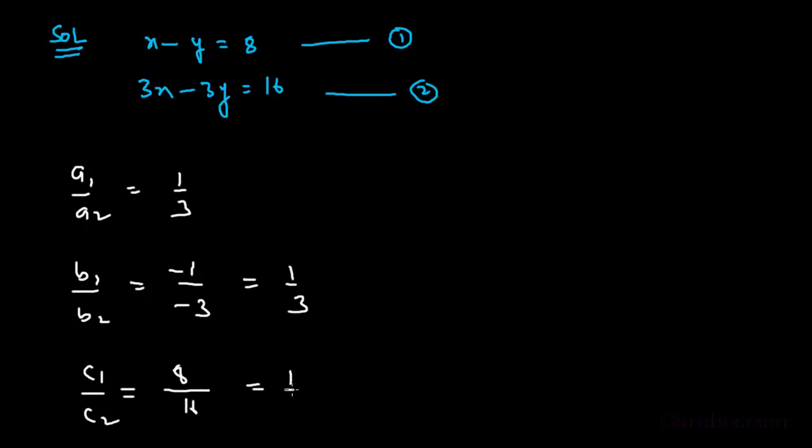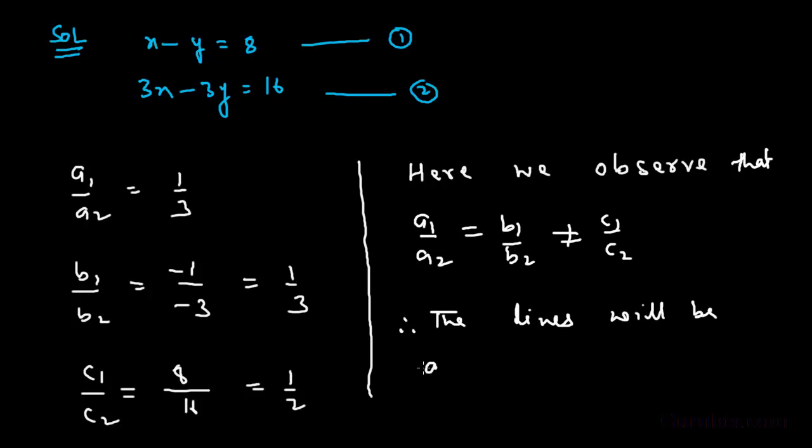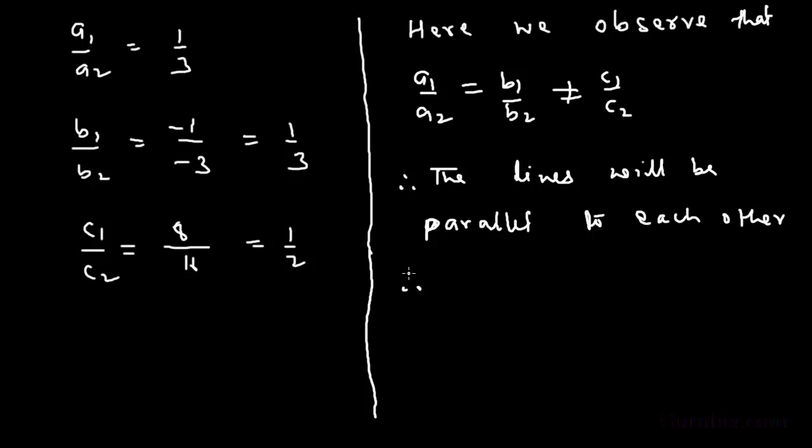Here we observe that A1 over A2 equals B1 over B2, but this is not equal to C1 over C2. Therefore, the lines are parallel to each other, and there is no solution to this pair of linear equations.